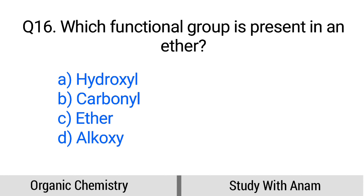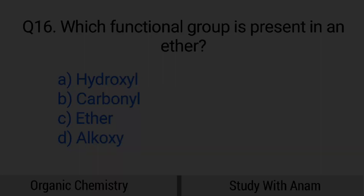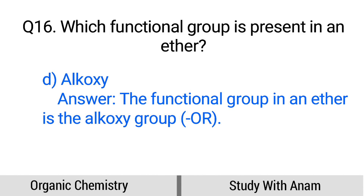Question number 16. Which functional group is present in an ether? Option A: Hydroxyl, B: Carbonyl, C: Ether, D: Alkoxy. The correct option is option D, Alkoxy. The functional group in an ether is the alkoxy group.